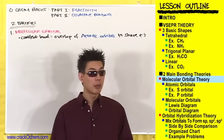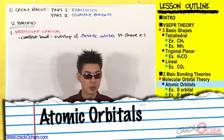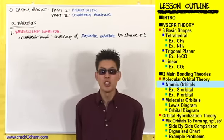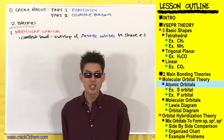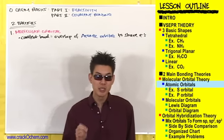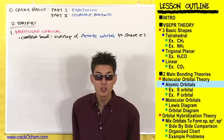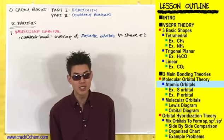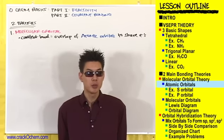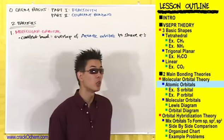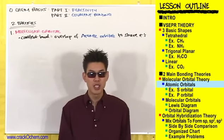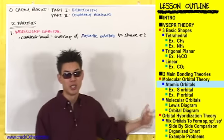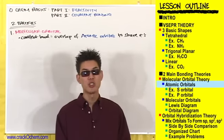Before we can talk about atomic orbitals overlapping, we need to know what an atomic orbital is. You already know what an orbital is — it's that rectangular box we drew on the diagram of an atom, located in the sub-shells. An orbital is the exact location of an electron, if we could find it. They call it an atomic orbital simply because orbitals are found in atoms. Don't be confused by the word 'atomic' — it's just the exact location of an electron.